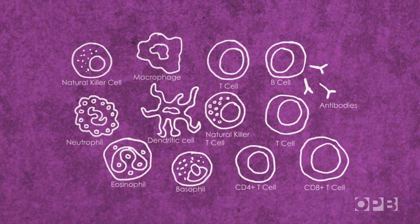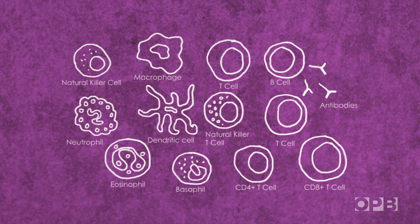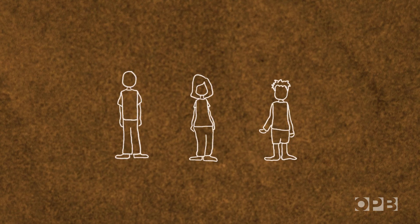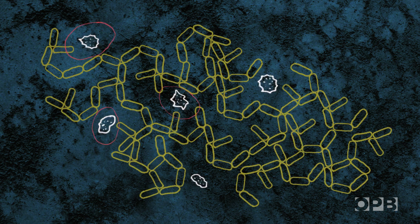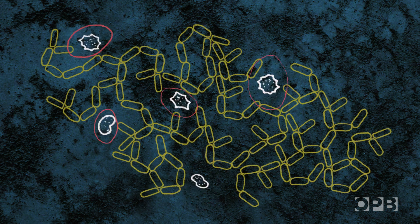But the immune system is immensely complex, and there's still a lot we don't know. Like, why do only some people get allergies? And why do our bodies attack pollen, but not the trillions of helpful bacteria that live in and on us?